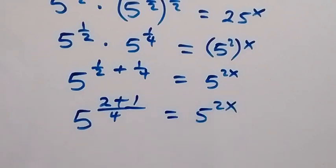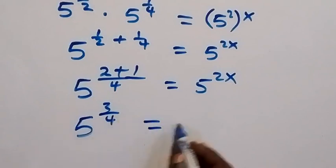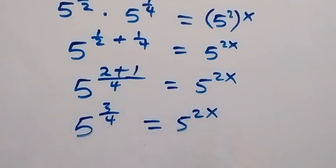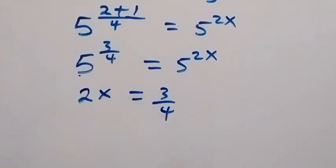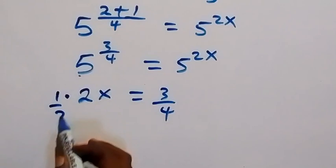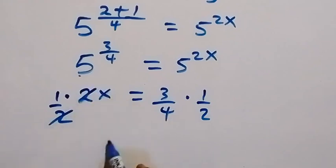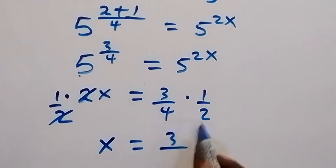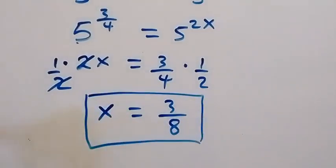This gives us 5 raised to power 3 over 4, which equals 5 raised to power 2x. Since the bases are the same, we equate the powers: 2x equals 3 over 4. We then multiply both sides by one-half to isolate x. The 2 cancels out, leaving x equals 3 over 8 — the same answer as before.